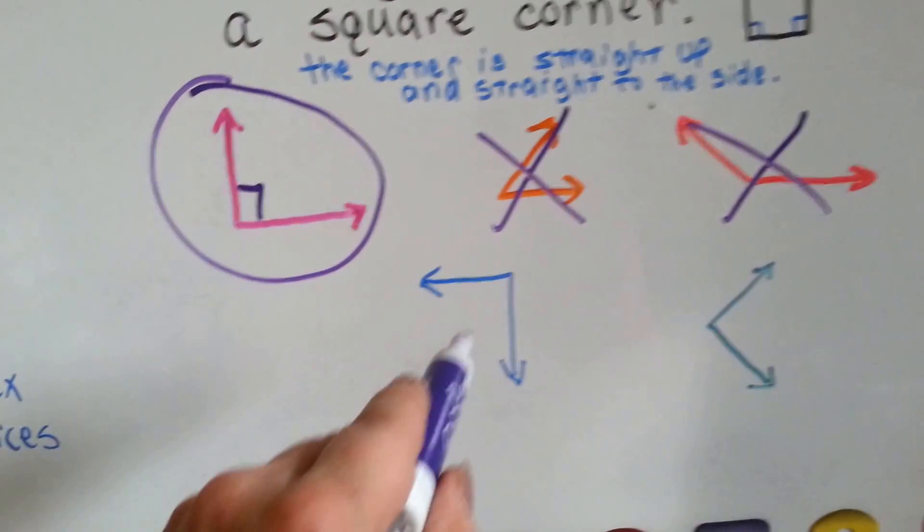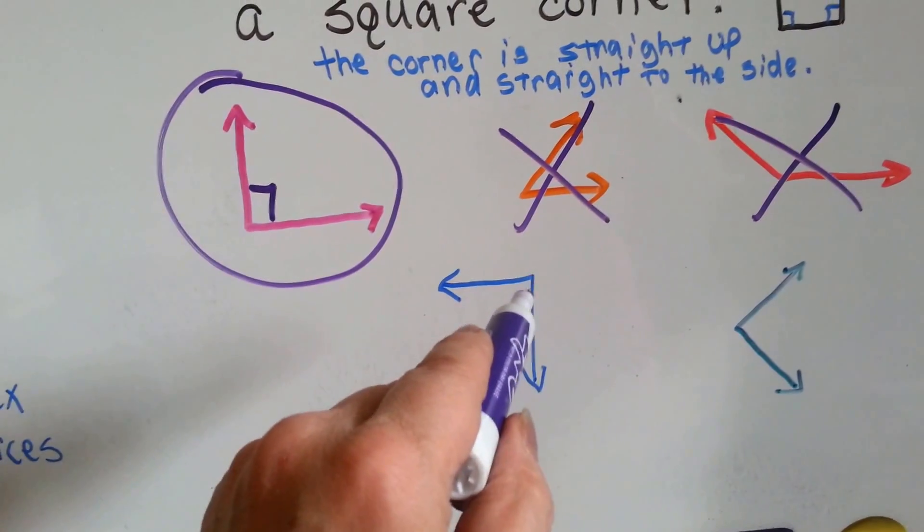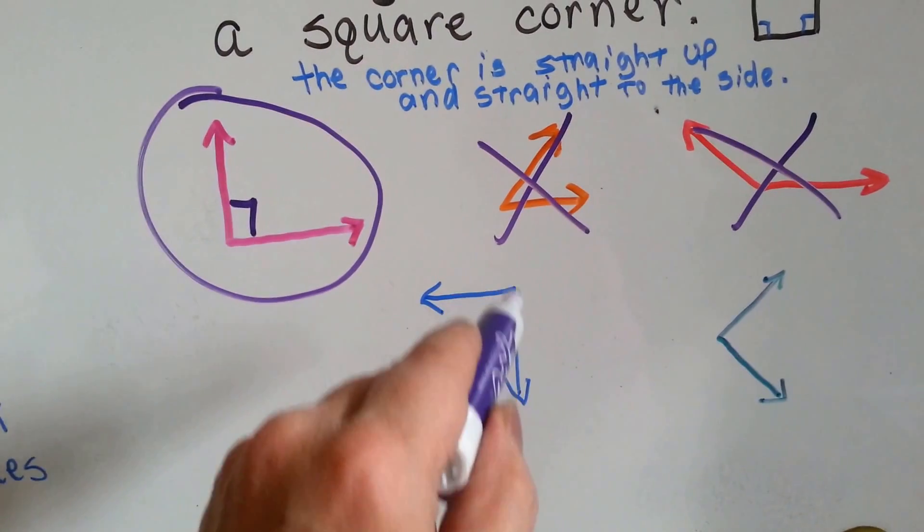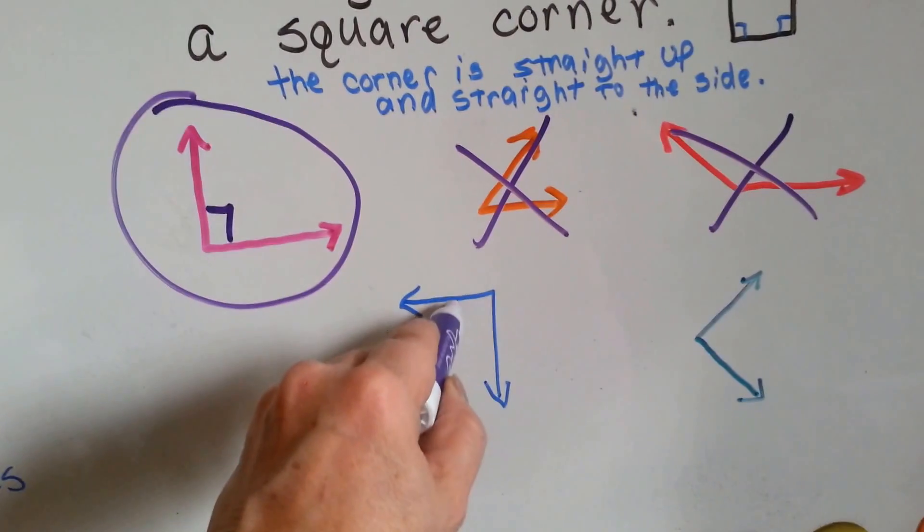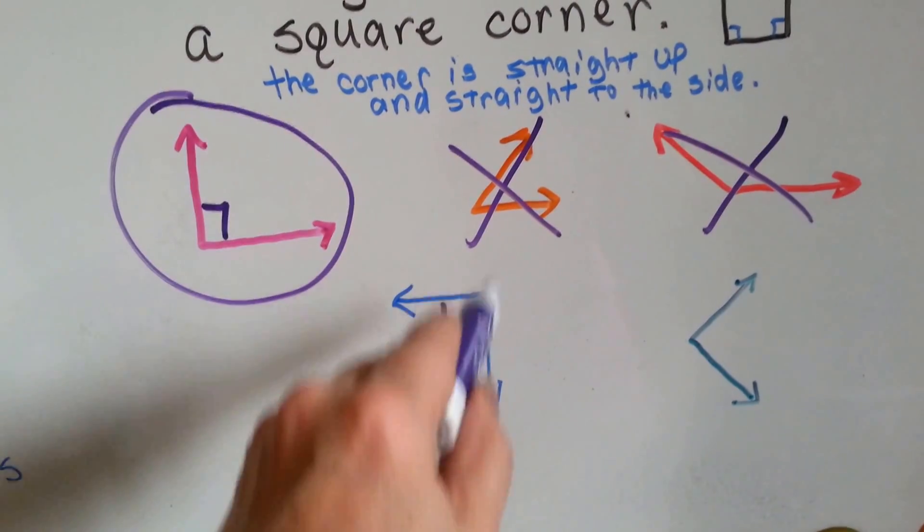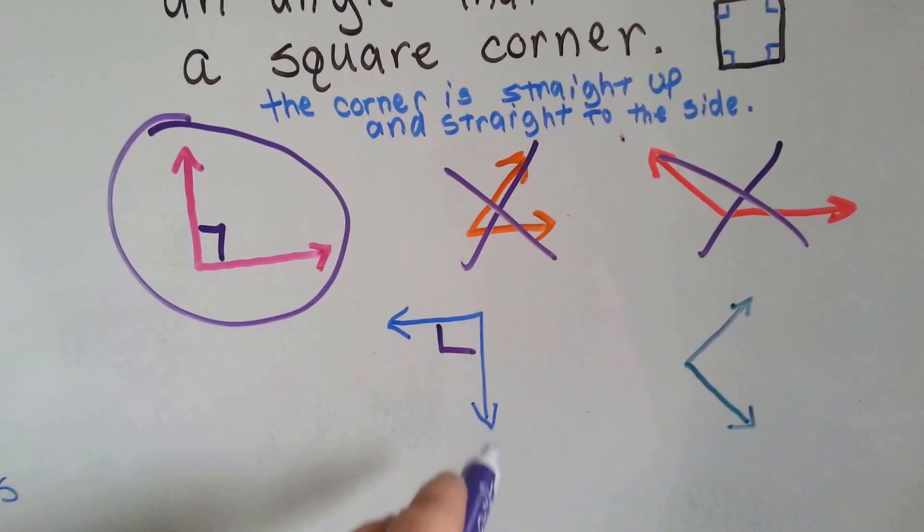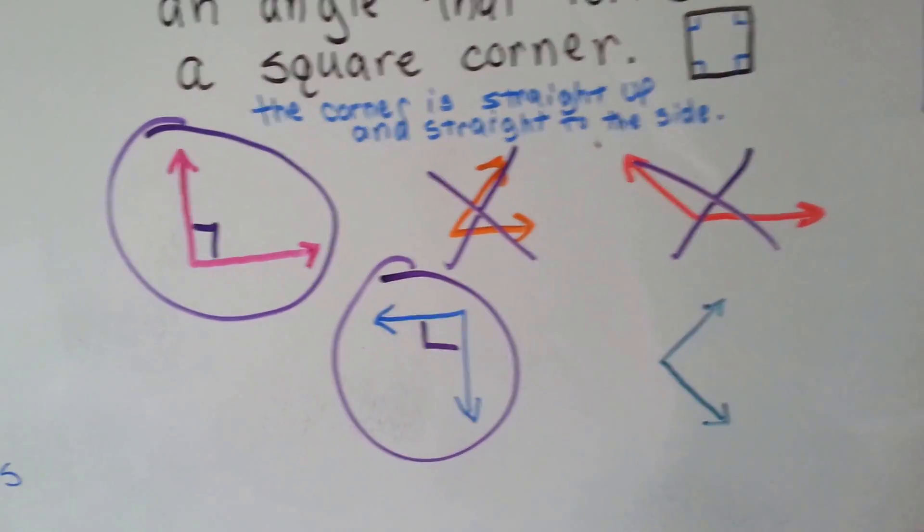How about this one? Does it go straight and then straight to the side? Well, it doesn't go straight up, but it goes straight down. See that? So yes, this is a right angle because it's making this squarey box shape. So that is a right angle.